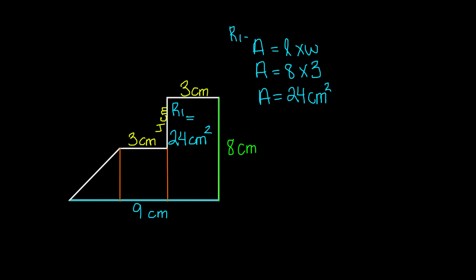Now let's find the area for rectangle number 2. We know that the width for rectangle number 2 is 3 centimeters, but now we need to find the length. If the total size of this irregular shape is 8 centimeters and one of the sides is 4 centimeters, then the other side is also 4 centimeters, since 4 plus 4 equals 8. So the length for this rectangle is 4 centimeters.